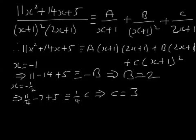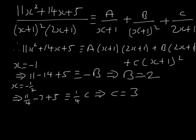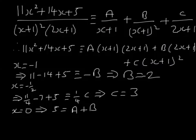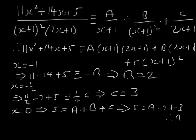We've put in minus one-half and minus 1, and there's nothing else obvious to substitute. You can put in any value — you could put in 100 and get an answer. But the sensible thing is to put in 0, because it's the easiest to work out. Substituting x equals 0: 5 equals 1 times A plus 1 times B plus 1 times C. I know B equals minus 2 and C equals 3, so 5 equals A minus 2 plus 3, therefore A equals 4.